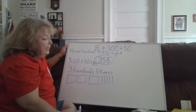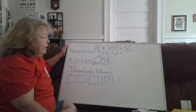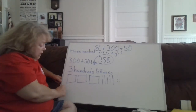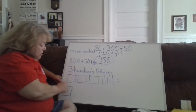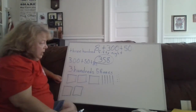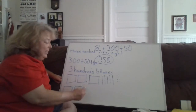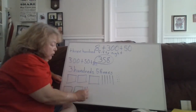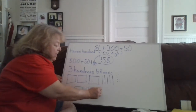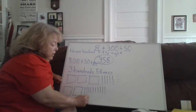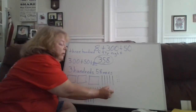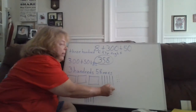What if I did it this way? I could draw two hundreds. And then if I did fifteen tens — one through fifteen — and eight ones: one through eight. Would that make three hundred fifty-eight? Let's see.